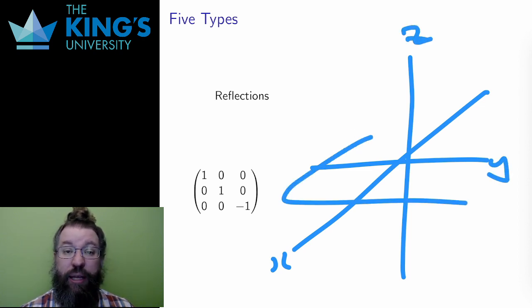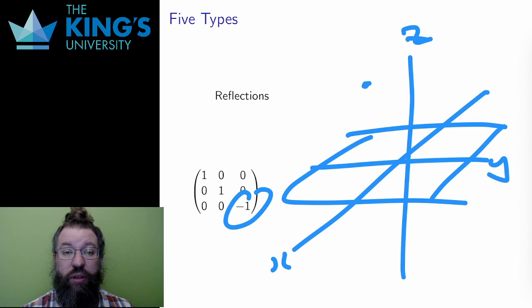Instead of choosing lines, I am choosing planes. In this example, having a negative one in the z-coordinate, I change all positive z-coordinates to negative z and vice versa.